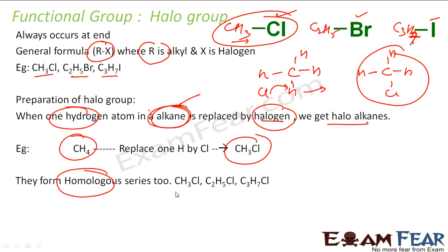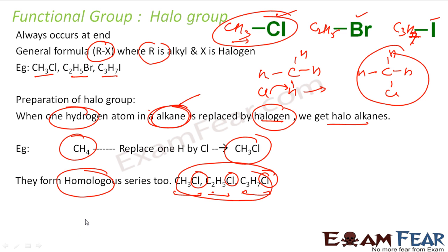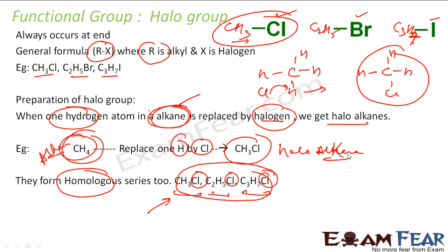Please note that haloalkanes also form a homologous series. For example: CH3Cl, C2H5Cl, C3H7Cl. In the homologous series, they have the same functional group — here the chlorine group. They also form a homologous series, meaning they have similar chemical properties. The preparation is simple: replace one hydrogen with the chlorine from any alkane, and you get a haloalkane.